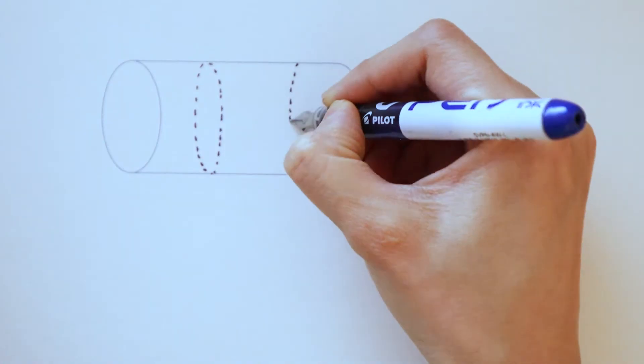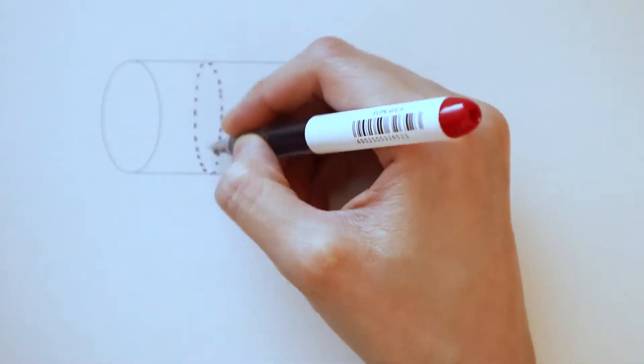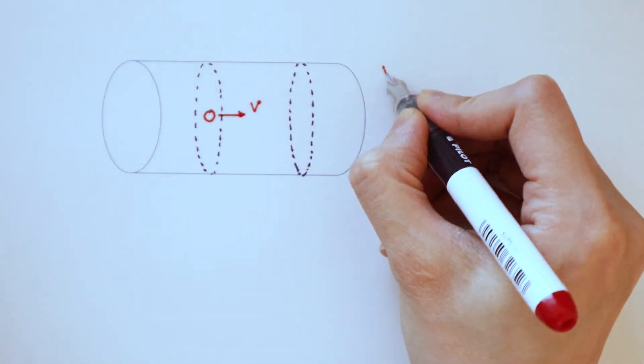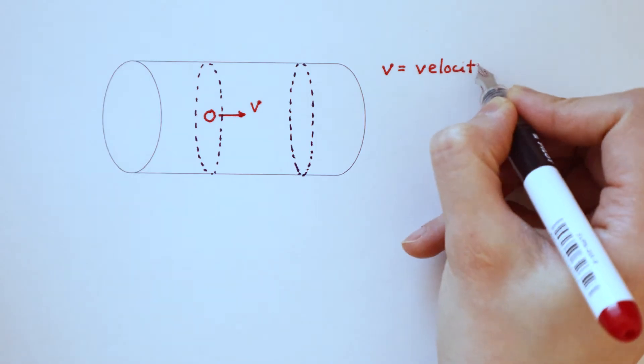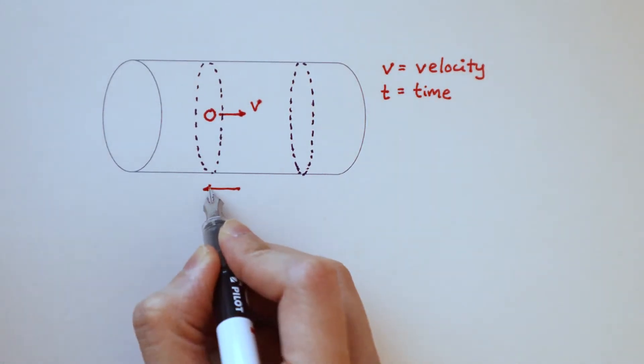Taking an electron at some position here, this electron travels with a velocity v. In time t, it travels a distance d.